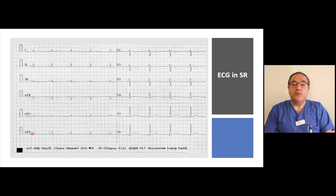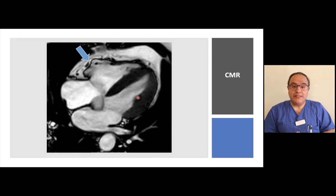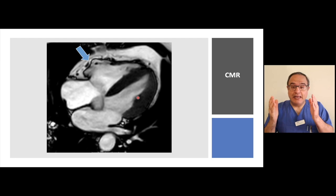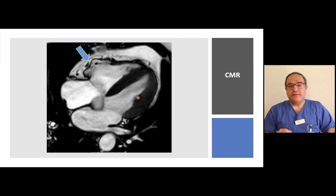Here we see the baseline ECG of the patient. What is very important to notice is the T-wave inversion in the precordial leads. Now, looking at the MRI of the patient, the imaging helps us confirm the diagnosis of arrhythmogenic right ventricular cardiomyopathy. Ventricular tachycardia with superior axis, T-wave inversion in precordial leads, and now the MRI makes the diagnosis complete.